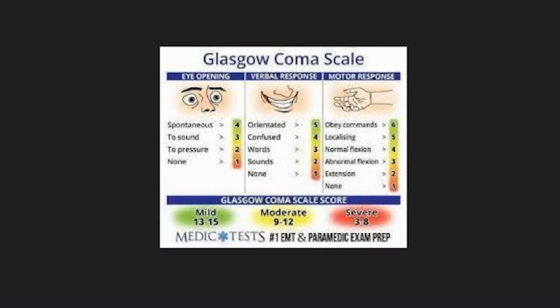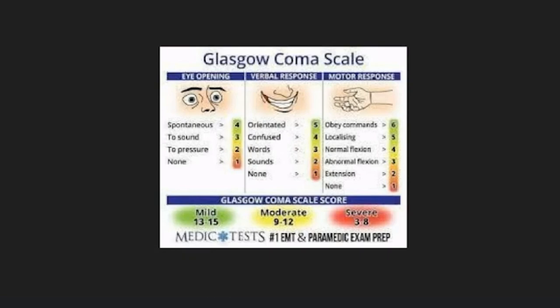Verbal response starts with none: if the patient is not talking at all, you give one point. If the patient responds with sounds only, you give two points. If the patient responds with words, three points. Confused response — where the patient can produce words but is unable to form proper sentences — gets four points.